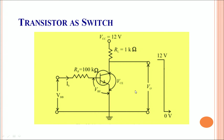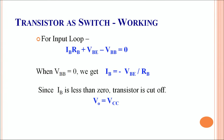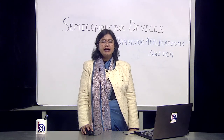When the transistor is working as a switch, looking at the input loop, there is a base current flowing across the resistance RB. Applying Kirchhoff's voltage law, the net voltage equation comes out to be: IB·RB + VBE − VBB = 0. If VBB is taken to be zero, IB comes out to be −VBE/RB. The moment IB goes less than zero, the transistor is cut off, and therefore V₀ equals VCC, and the transistor acts like a switch.